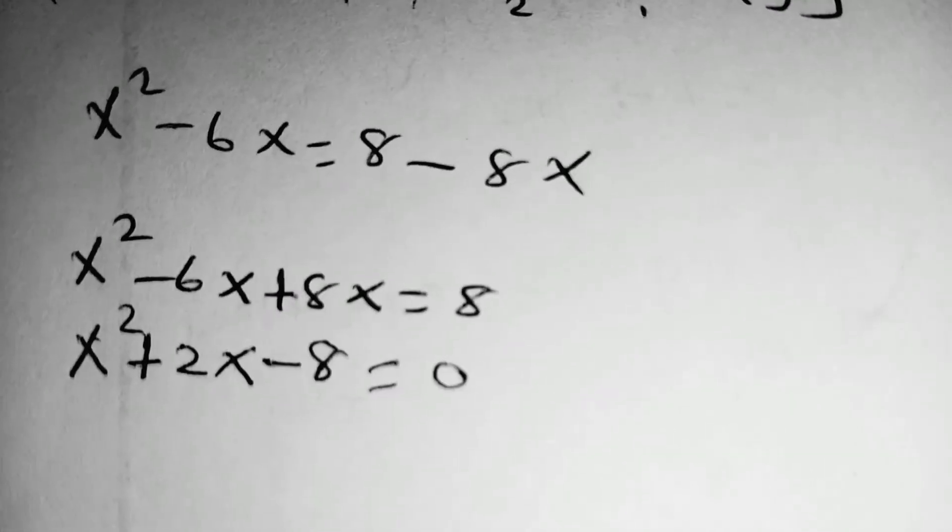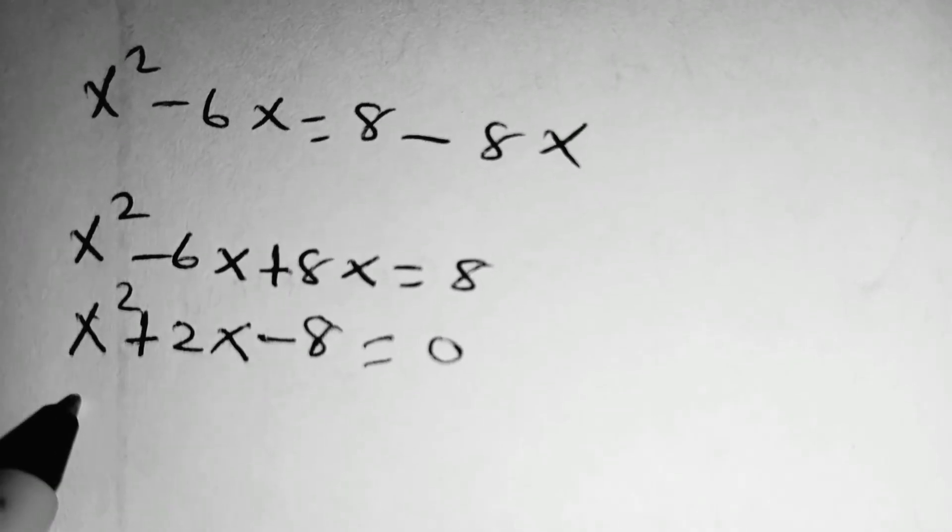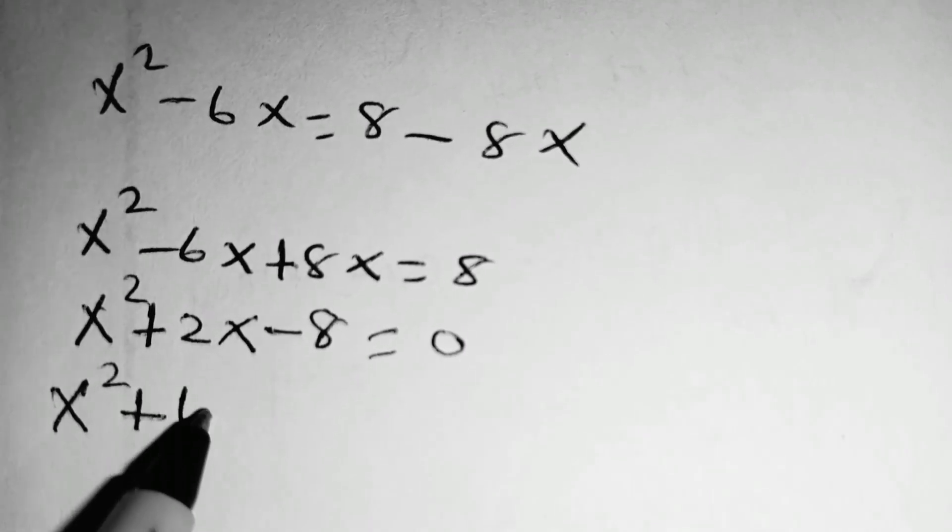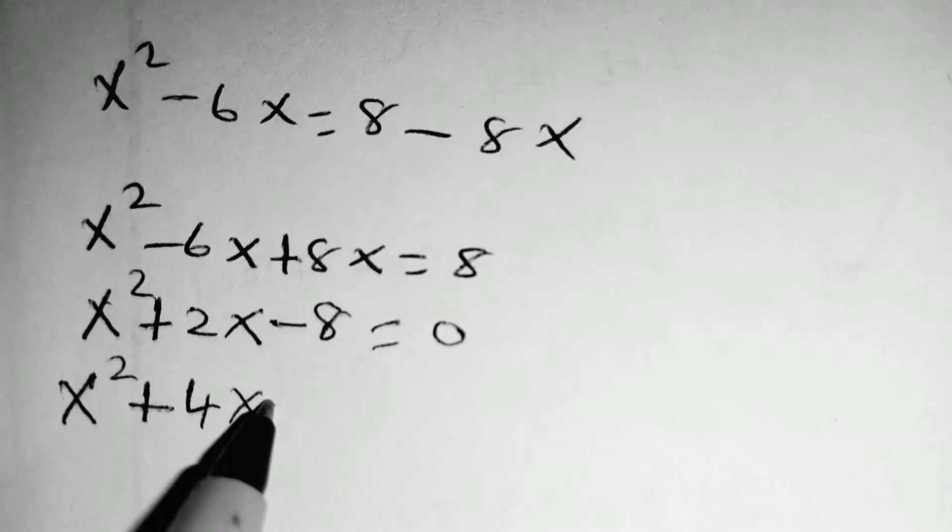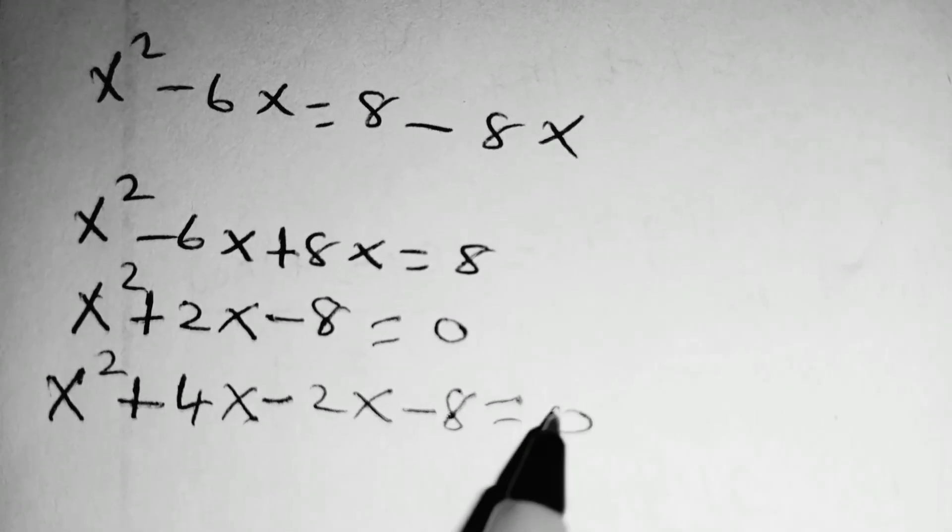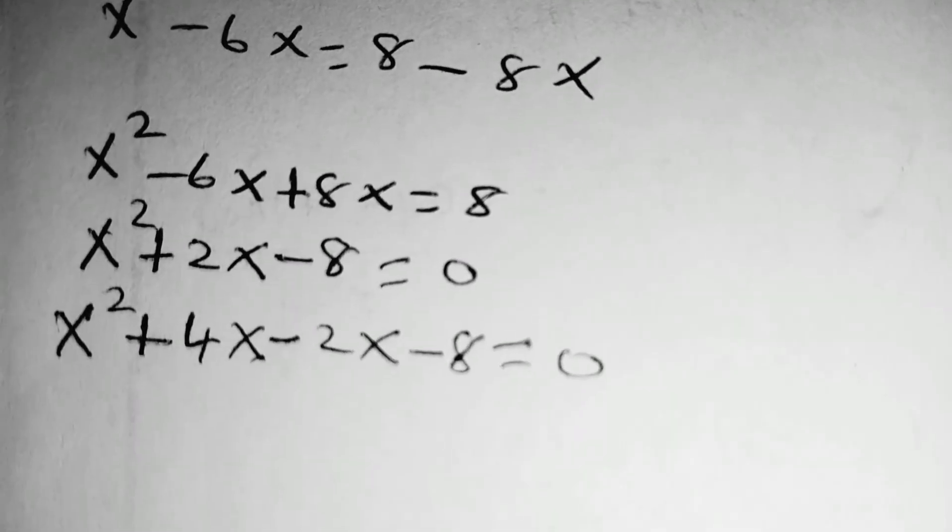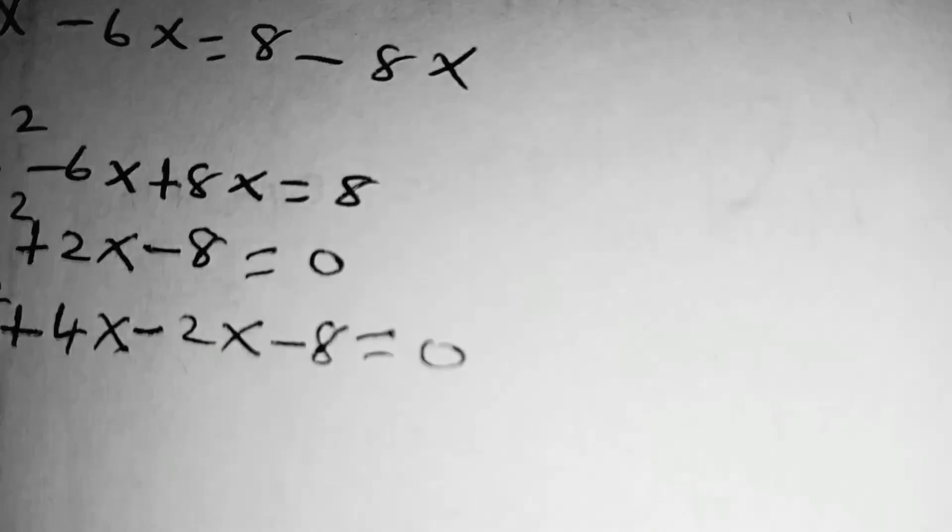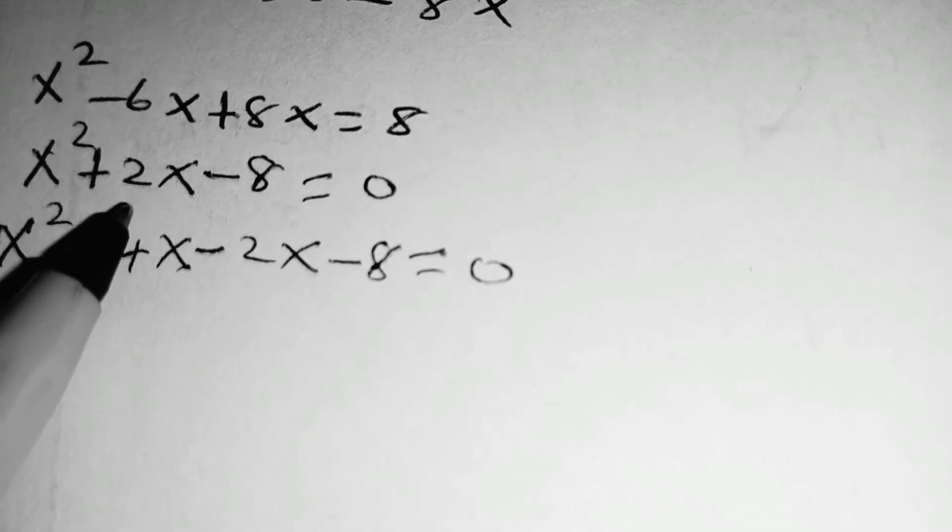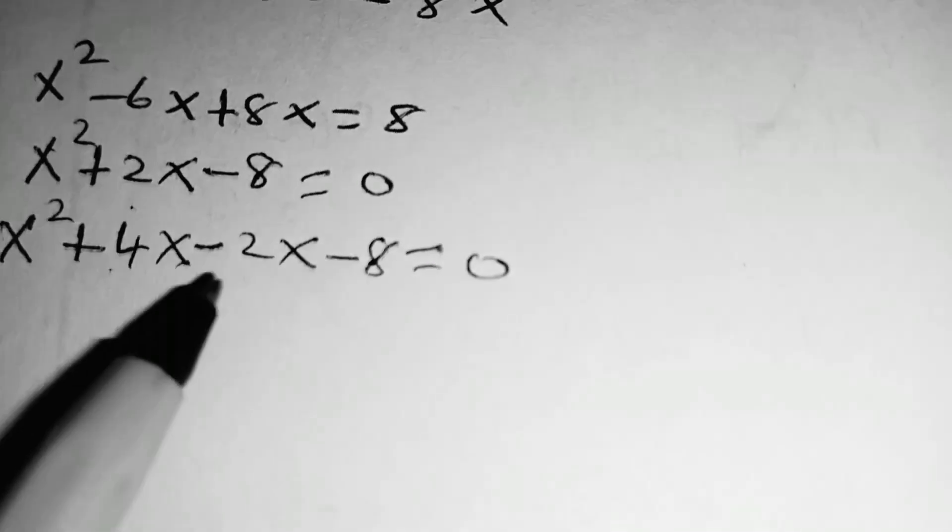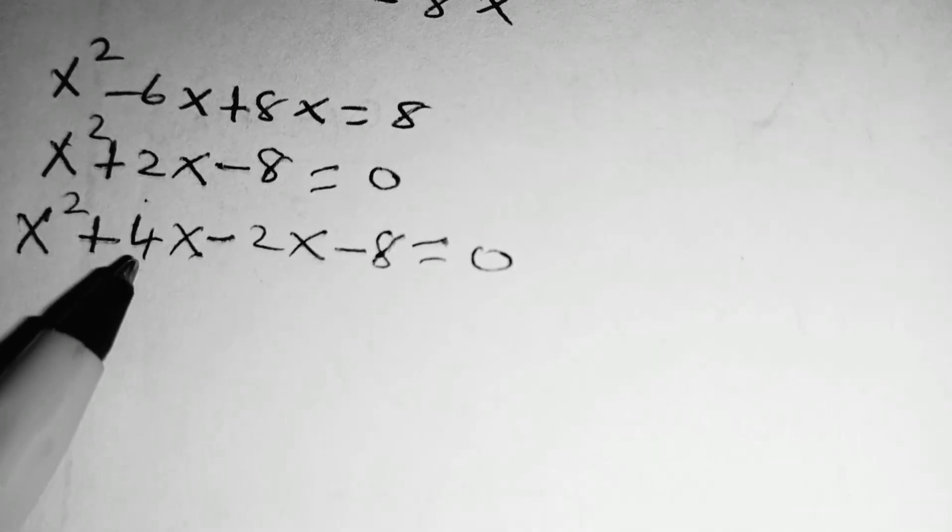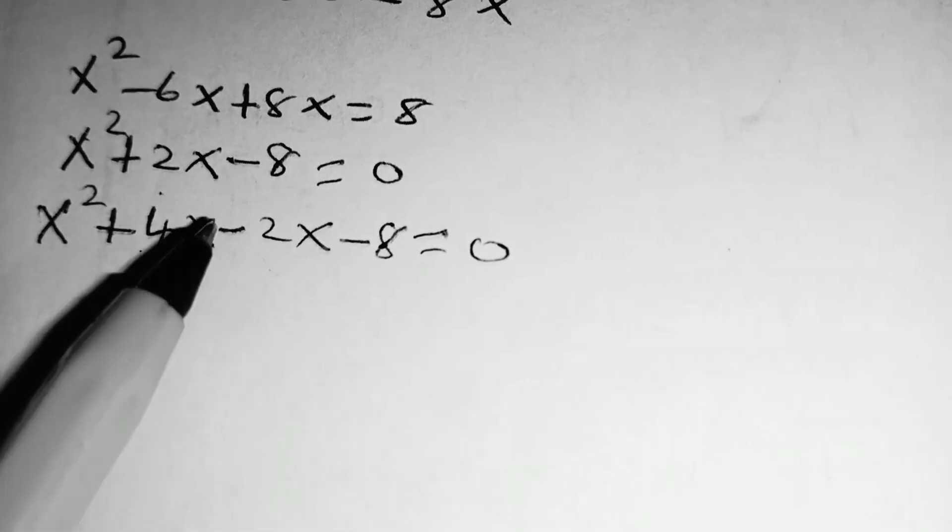The quadratic equation, which can be factorized as follows. You have x squared plus 4x minus 2x minus 8, which is equal to 0. You will simply ask yourself, what are two numbers which when you multiply, the result is negative 8, and when you add, the result is 2. So it is 4 and 2, because 4 times 2 is 8. Because of this negative, it will be negative 8. When you add 4x minus 2x, the result will be 2.